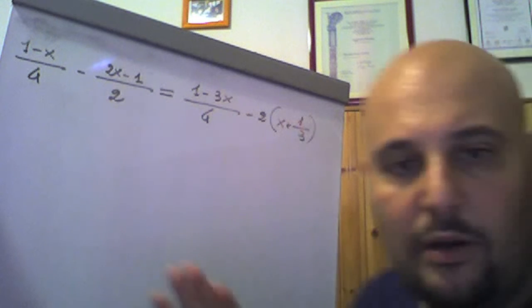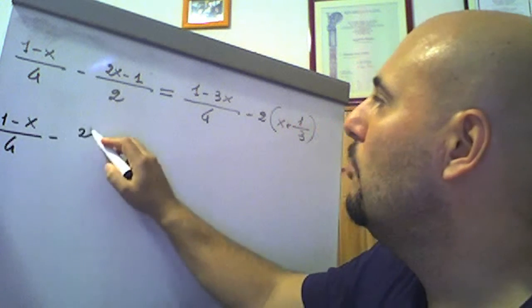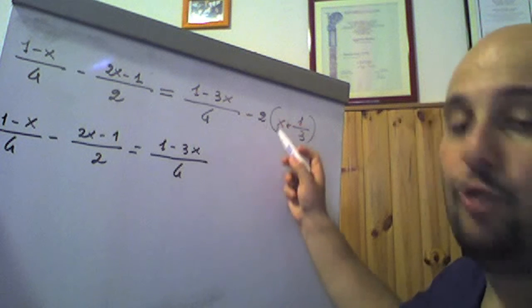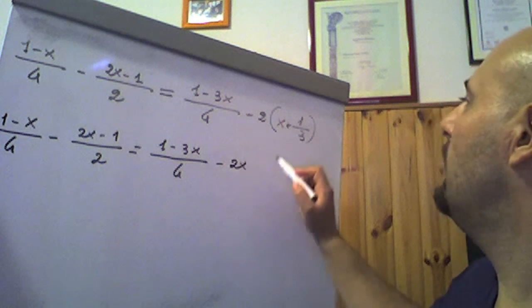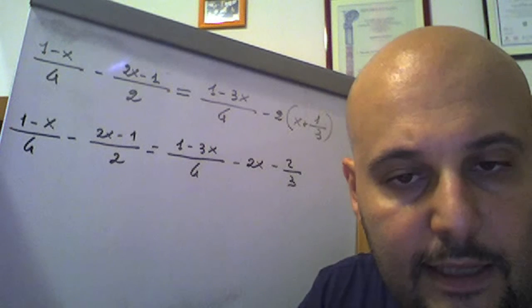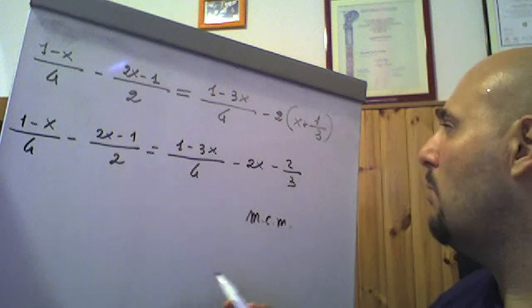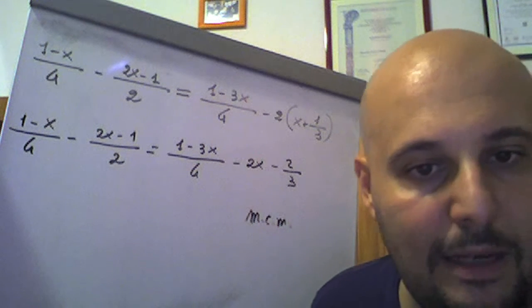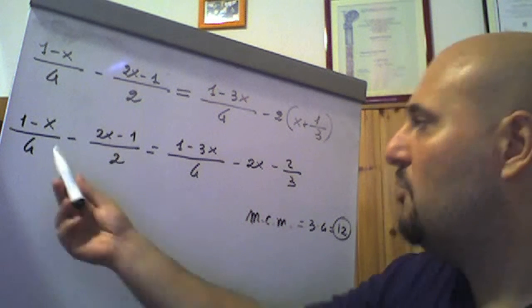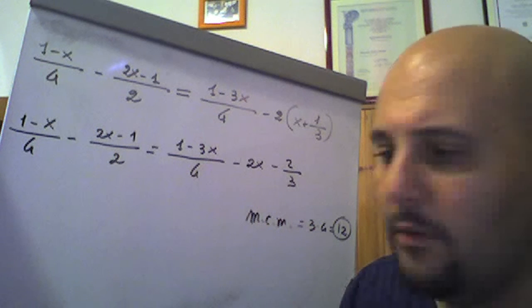A very easy trick to solve equations with fractions: first make sure there are only fractions by expanding any products. So we rewrite: (1 − x)/4 − (2x − 1)/2 = (1 − 3x)/4, then multiply −2 by (x + 1/3), obtaining −2x − 2/3. The trick is to find the LCM of the denominators present. We have 4 (= 2²), 2, 4, 1, and 3. The LCM is 3 × 4 = 12.